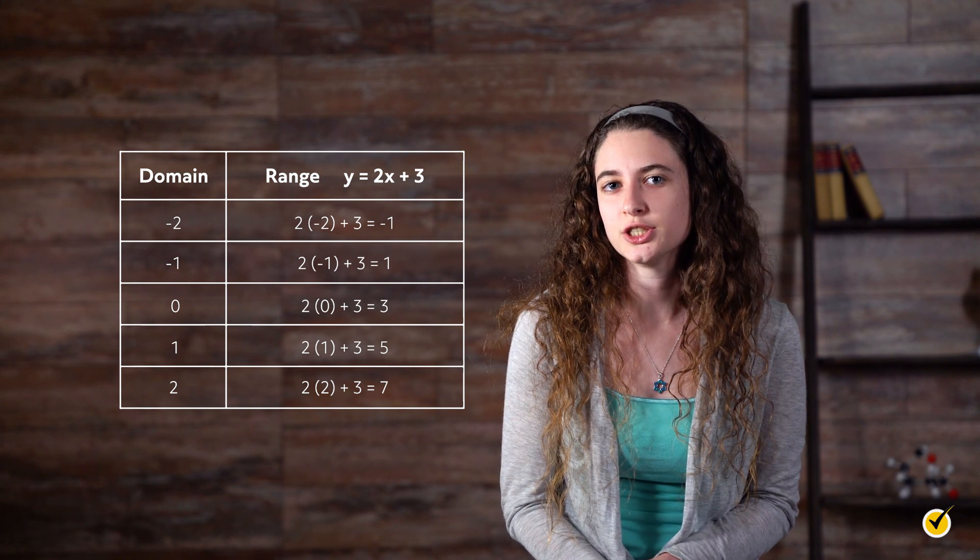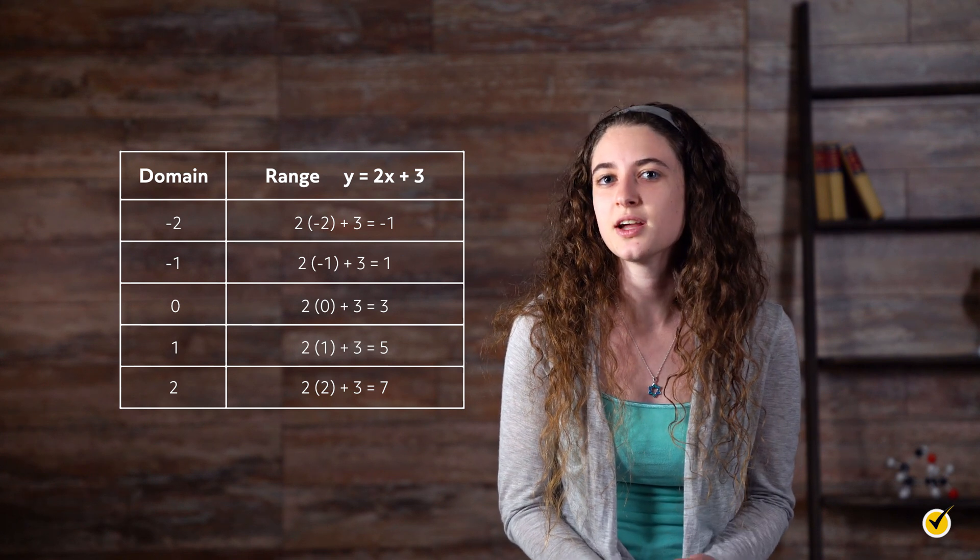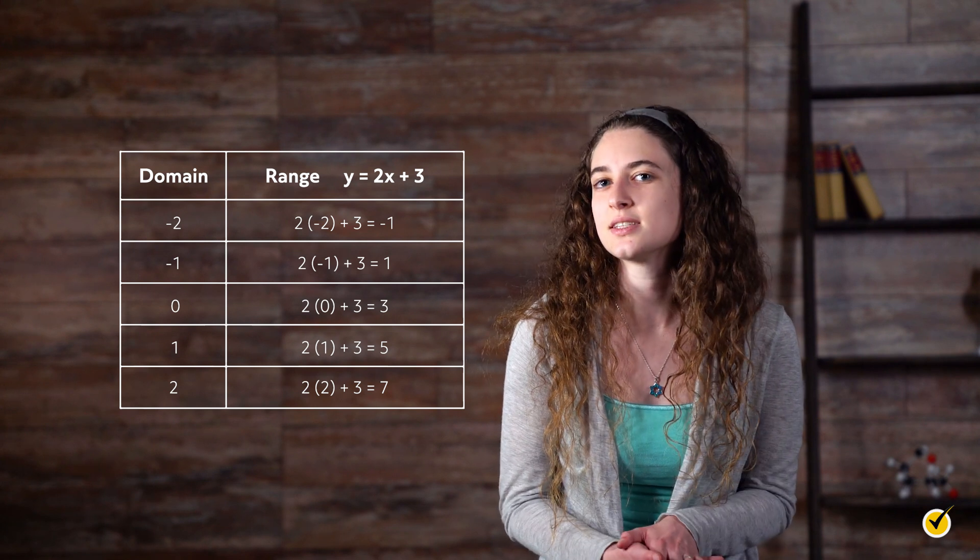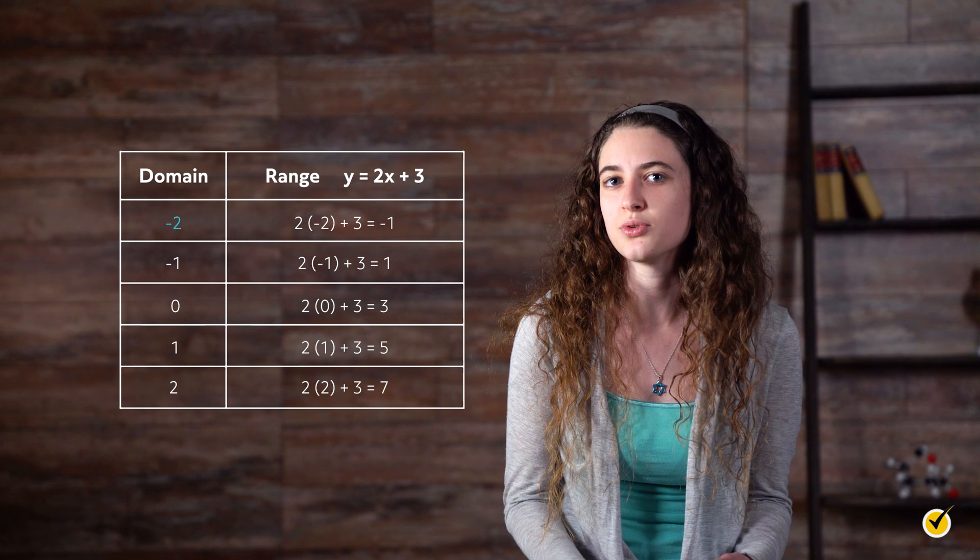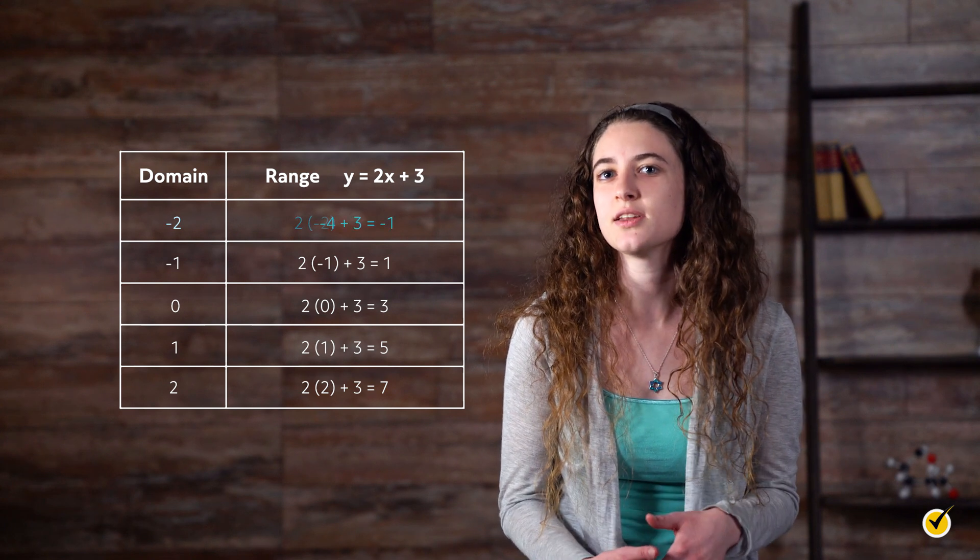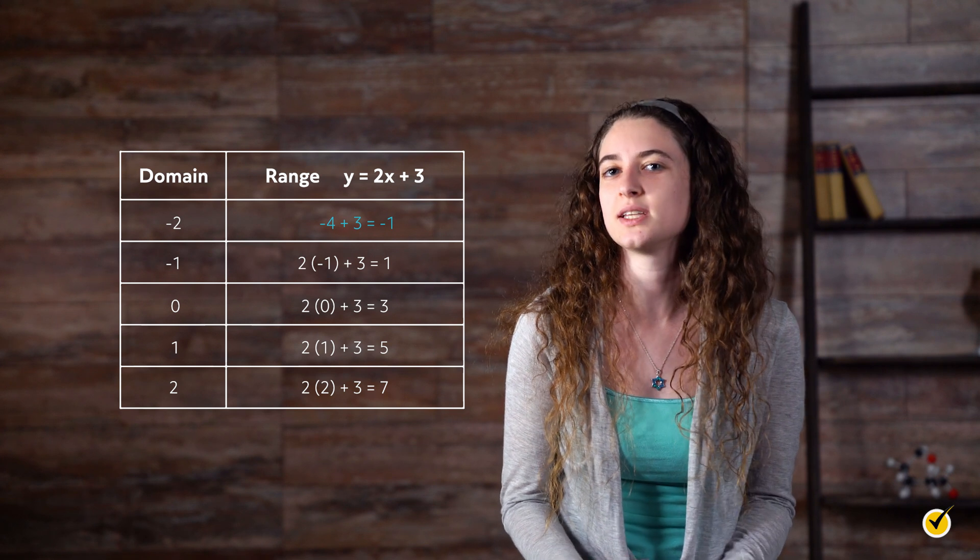Let's look at some of the different outcomes of the equation. So we have our equation here, and the different values that x could be listed here. For instance, if we find out that x is negative 2, our problem would look like negative 2 times 2, which is negative 4, plus 3, which equals negative 1.